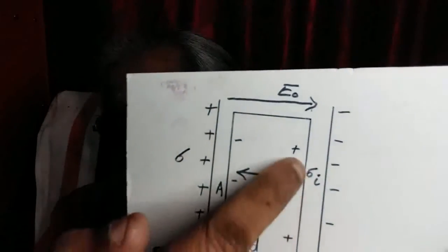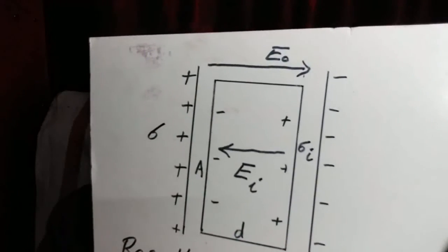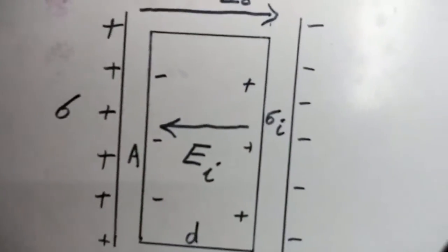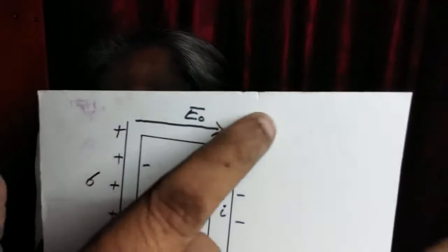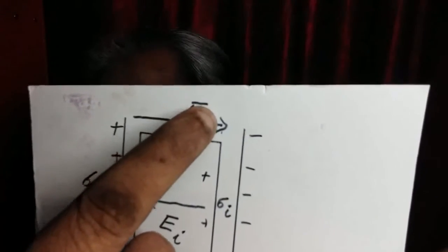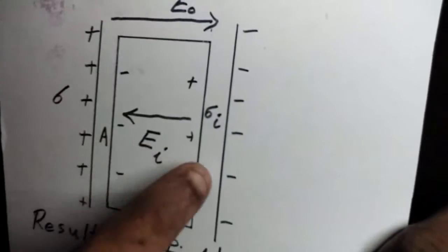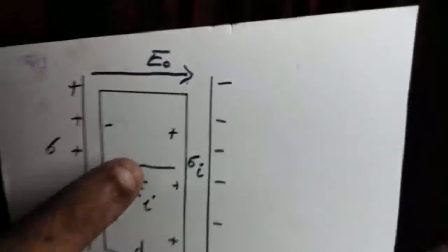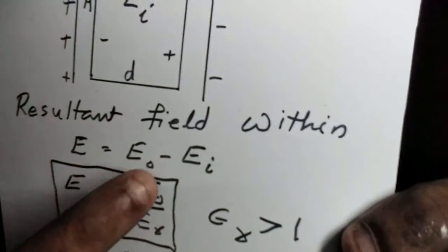Sigma I is the surface density of charge on the face of the slab. Sigma I is called induced charge density or polarization charge density. Now we have two electric fields here. One is the applied electric field created by the bound charge density, let it be E0. The other is the field created by the induced charge density, let it be EI. These two fields oppose each other so that the resultant intensity within the slab becomes E equals E0 minus EI.